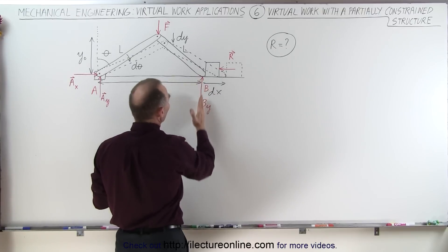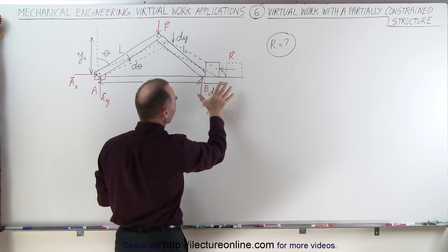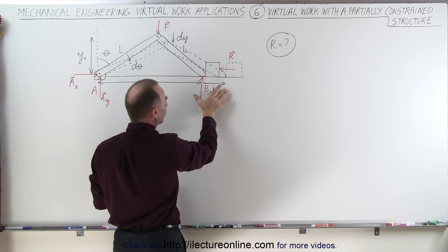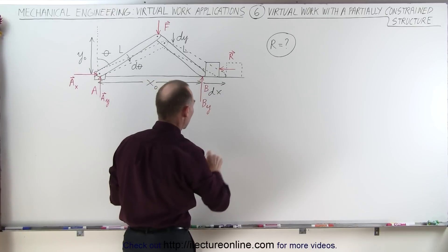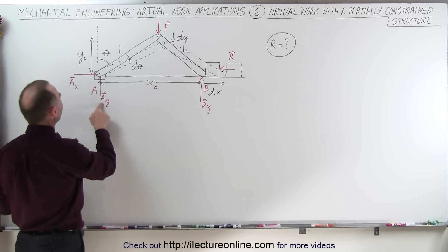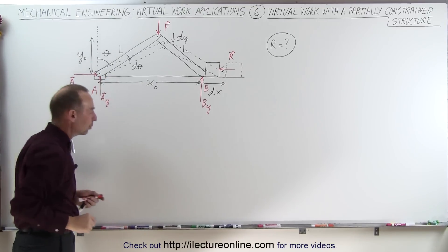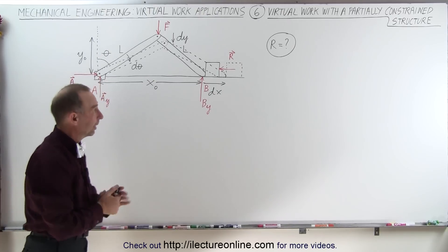But since B sub Y is pointing perpendicular to the change in the direction, the X here, that means the angle between the two is 90 degrees, so that way we can simply ignore B sub Y. And we can ignore A sub Y and A sub X because this point right here does not move at all. So there's no virtual work done.